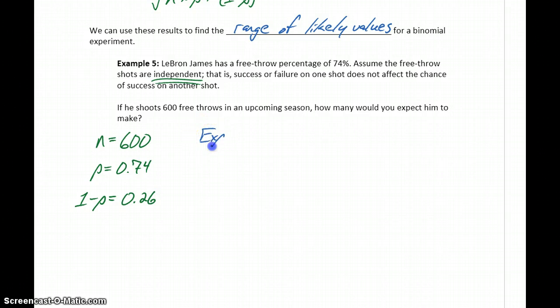We can calculate the expected value for this distribution, which is going to be 600 times 0.74, which equals 444. So if in an upcoming season he had 600 free throw attempts, our expected value, our expected number of successes, would be 444.